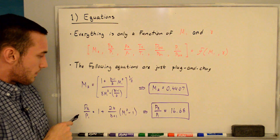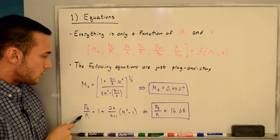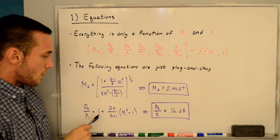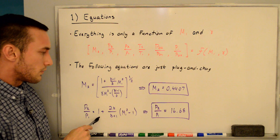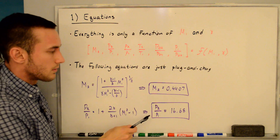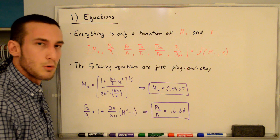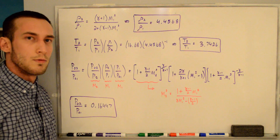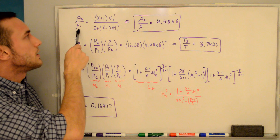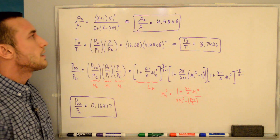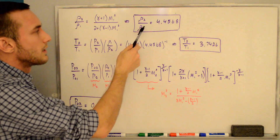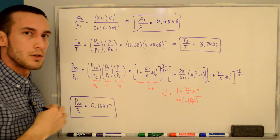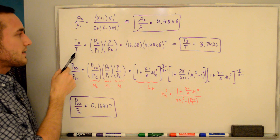For the static pressure ratio p2/p1, we have an expression that is only a function of M1 and gamma. Note there is a plus one term that people sometimes forget. Solving gives p2/p1 = 16.68, indicating pressure increases across a normal shock. Moving on to the static density ratio, also only a function of M1 and gamma, we get ρ2/ρ1 = 4.4568, so static density also increases across a normal shock.